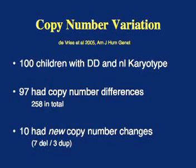However, only 10 children had new copy number changes that were not found in their parents. Of those, seven were deletions and three were duplications. So the conclusion is that almost everyone has a copy number difference, but most are not associated with disease even though they include genes.